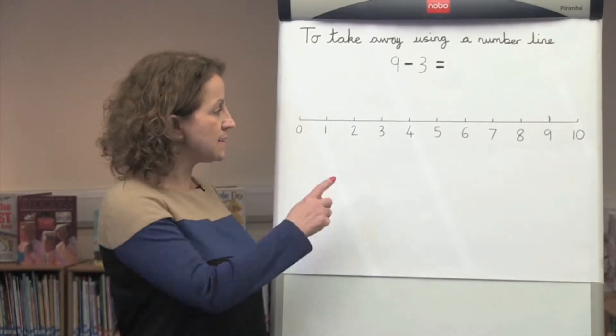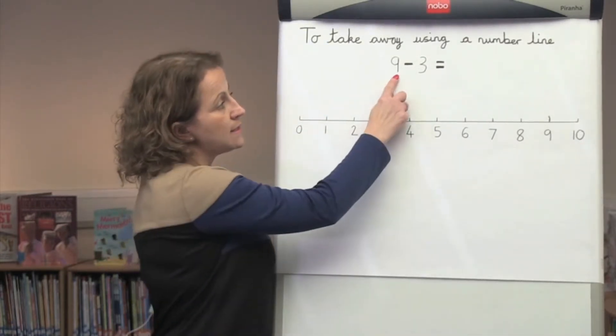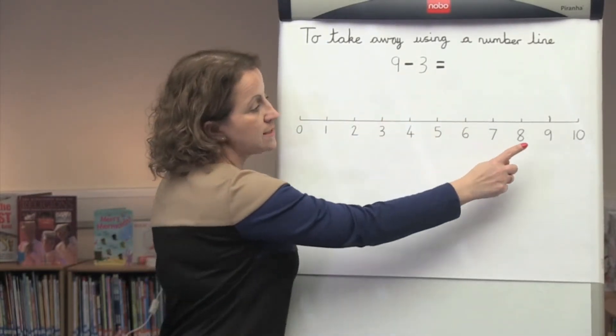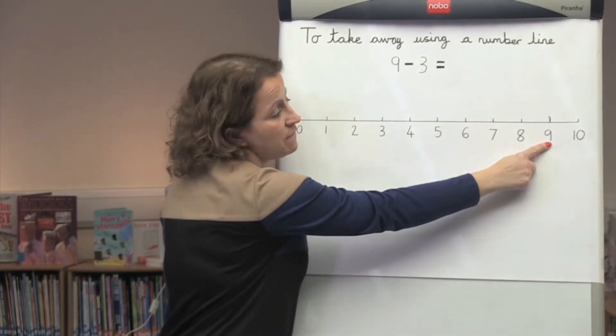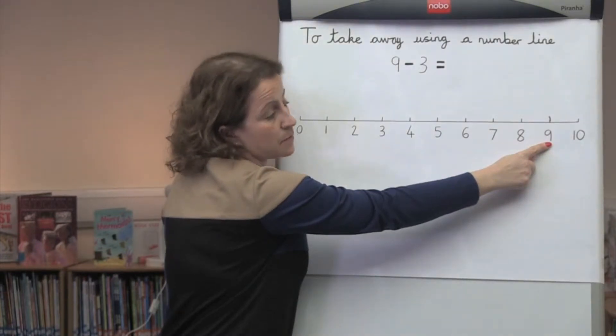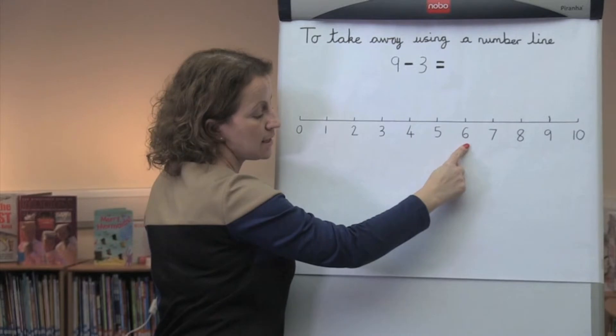Here is the number line starting at 0, ending at 10. To do 9 take away 3, we start at 9, pretend we have a frog on the end of our finger and jump backwards 3 steps: 1, 2, 3, and the answer is 6.